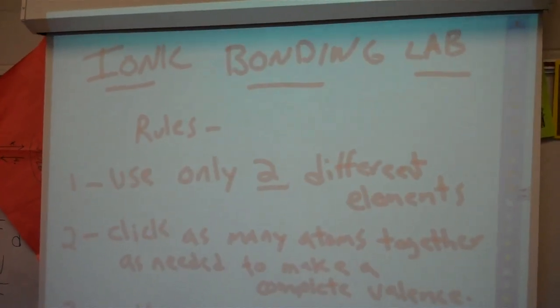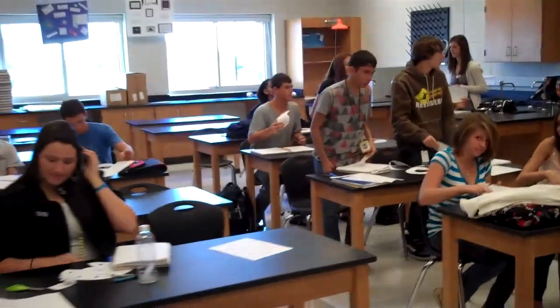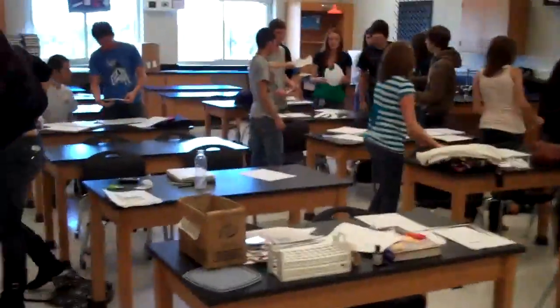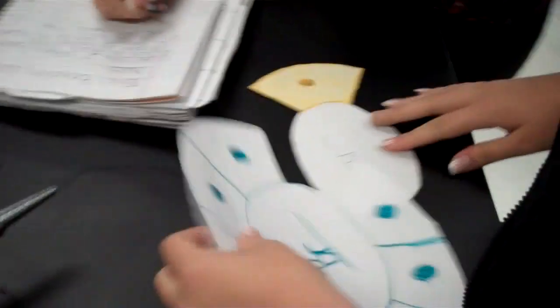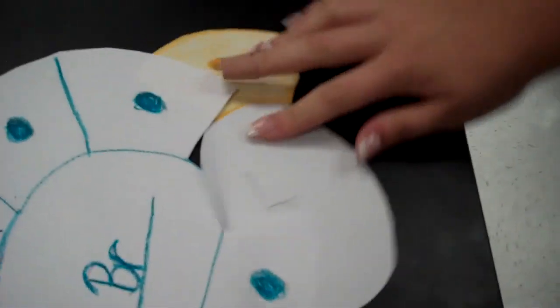Alright, you guys ready to do it? We've got the rules. Let the Benny Hill music begin. Okay, what do y'all have? We have potassium and bromine. This one has seven and this one has one, so it bonds together.